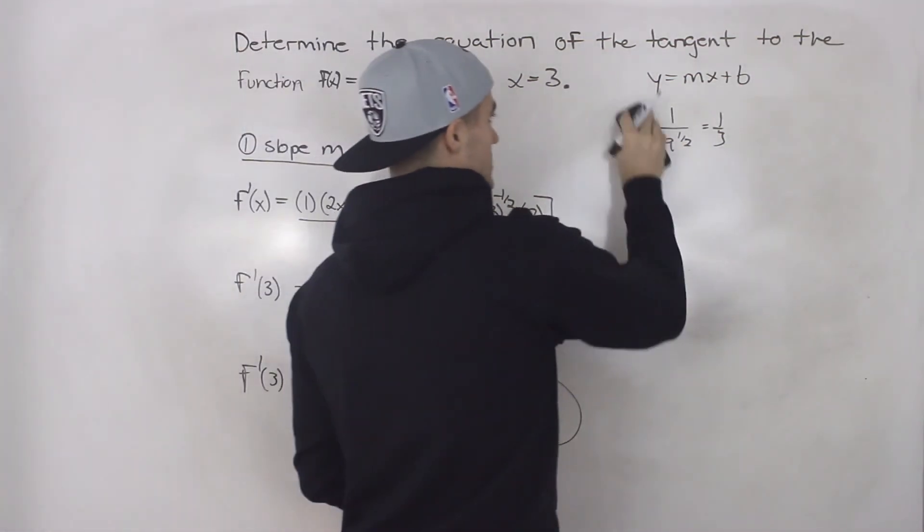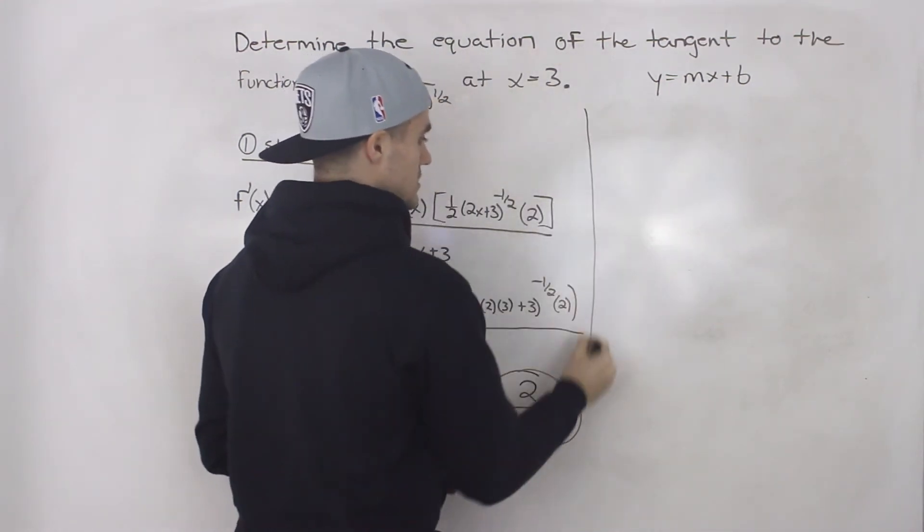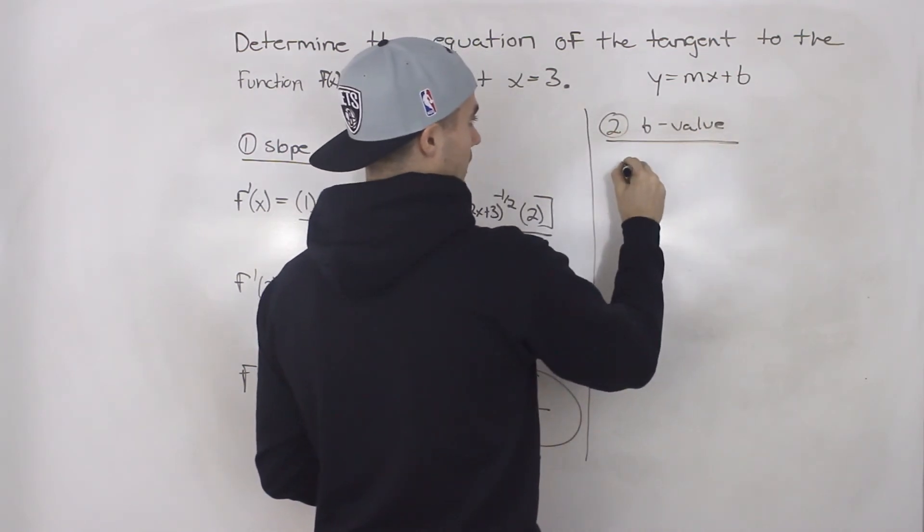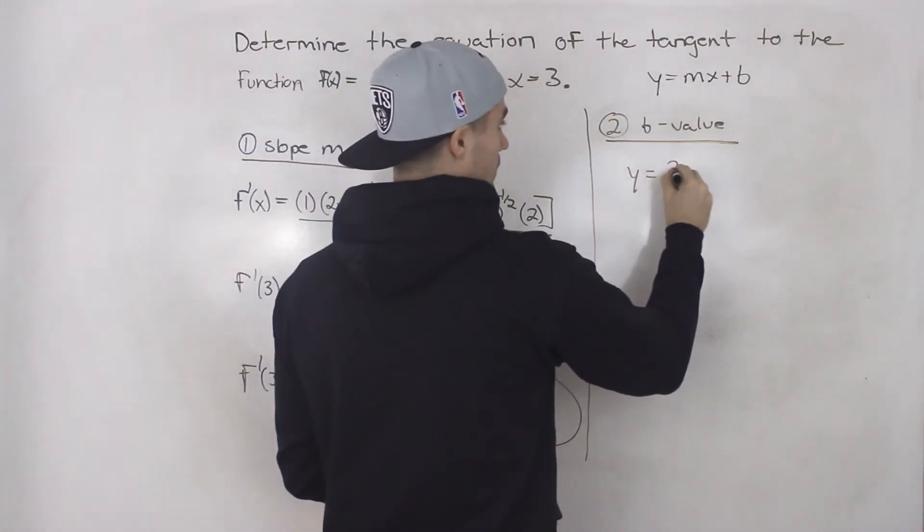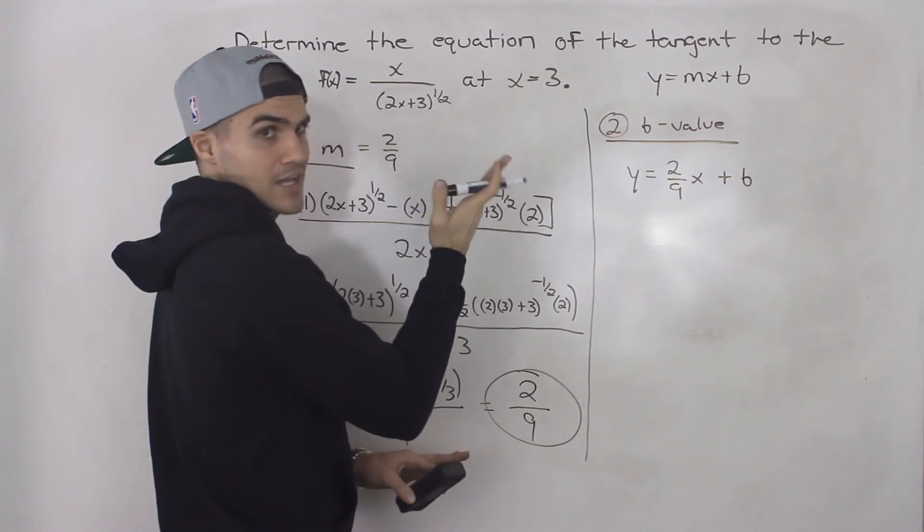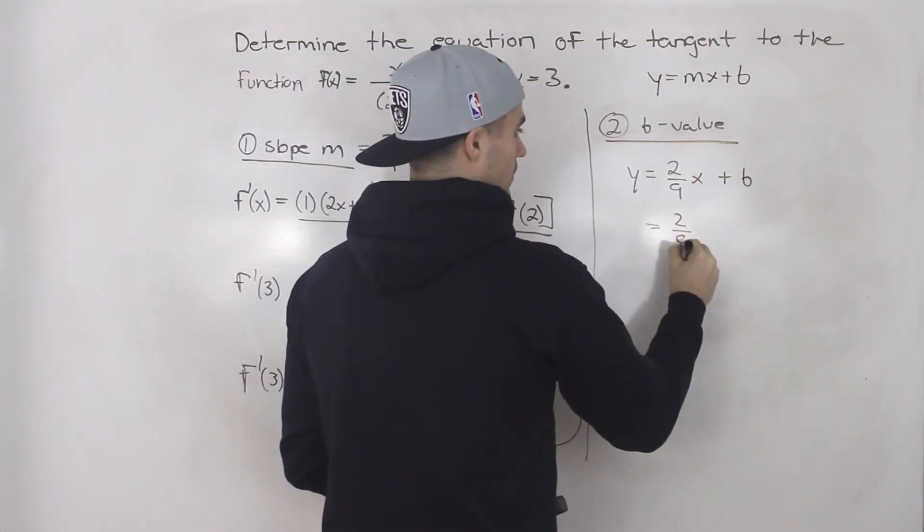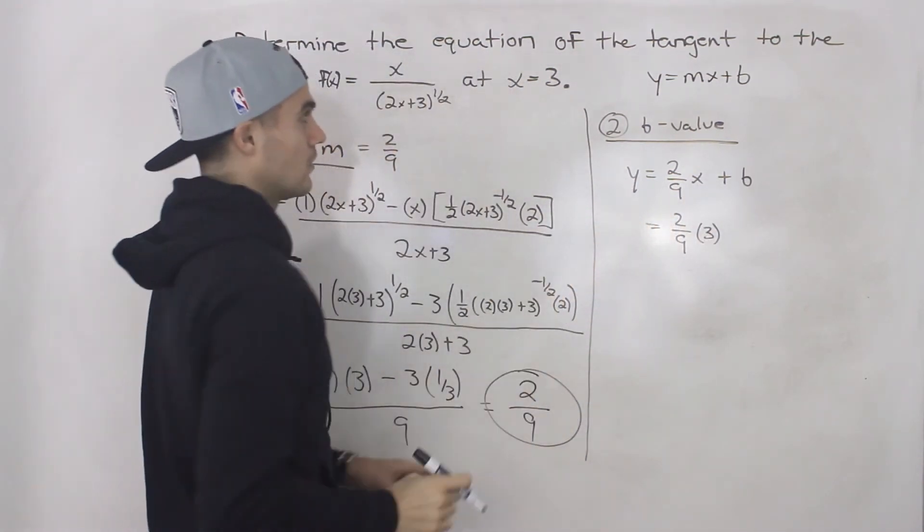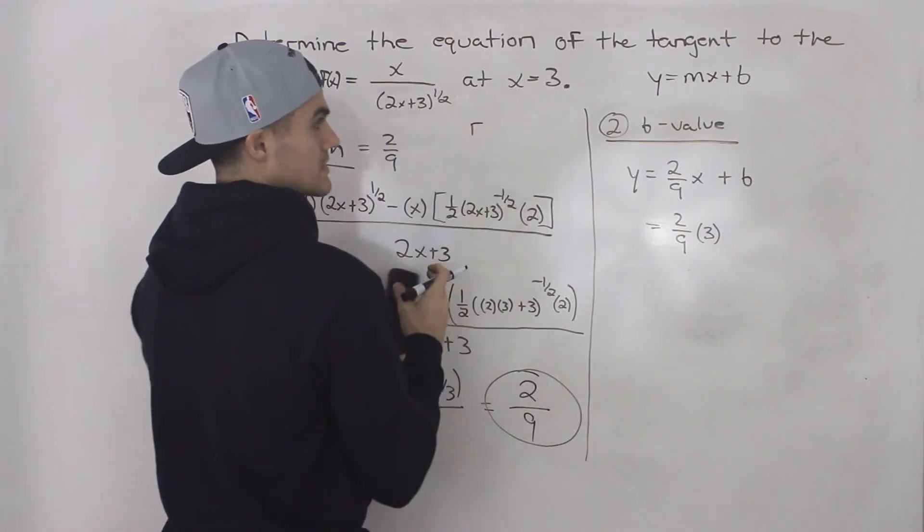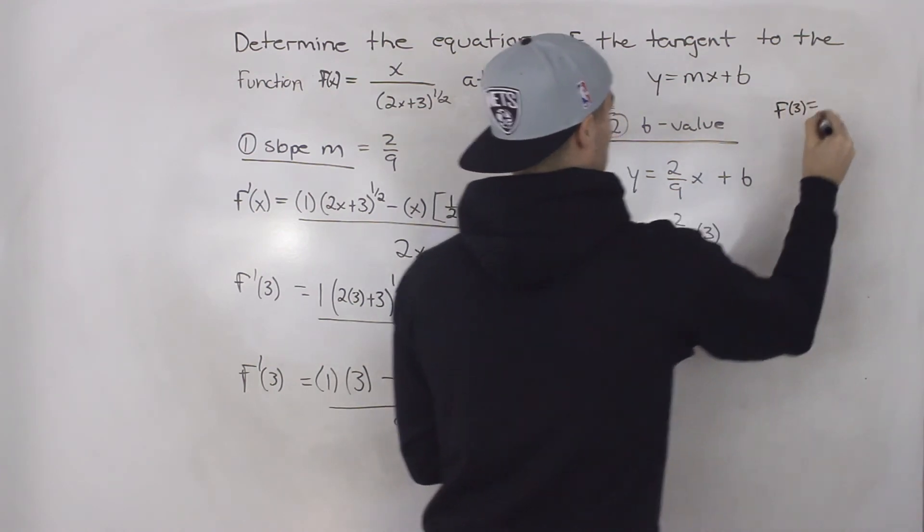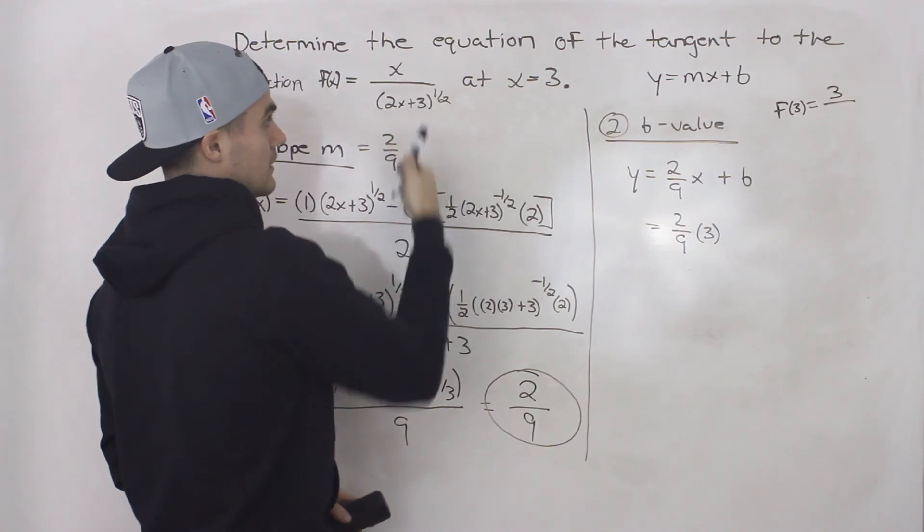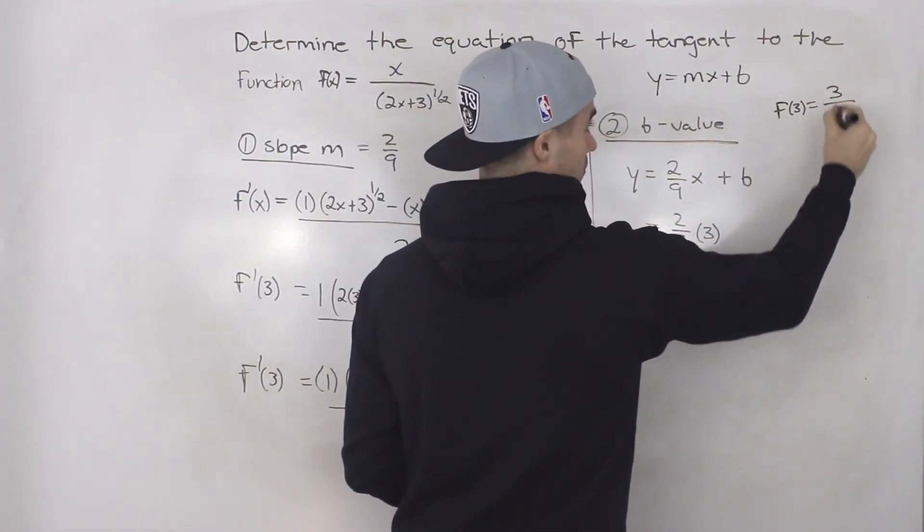And now what we can do is we can find what the b value of that tangent is going to be. So our second step is we find the b value or the y-intercept. And the way we do that is we bring in our slope that we just found, 2 over 9. That's going to be 2 over 9 x plus b. And then what we do is we plug in the coordinate on the function for which that tangent is going to be on. Well, we know it's going to be at an x value of 3. But what's the y value going to be? Well, what you have to do is you have to take that x value of 3, plug it into the original function. So doing it on the side here, f of 3 is just going to be 3 up top, all over, if we plug in 3 here, 2 times 3 is 6 plus 3 is 9, 9 to the power of a half is 3. So it's going to be 3 over 3, which is just 1.